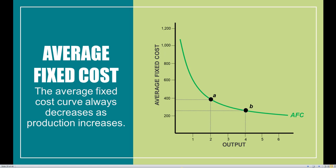The average fixed cost curve always decreases as production increases, because fixed cost itself is a constant value. As we increase production — as we increase the amount of goods the firm produces — it's going to be spread over more and more units. At very low outputs, the average fixed cost is very high, but as we increase production, the average fixed cost starts to decline and gets really, really close to zero.